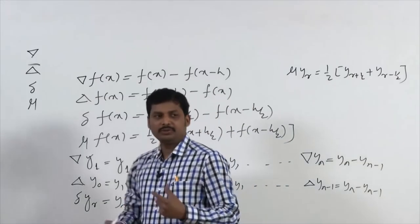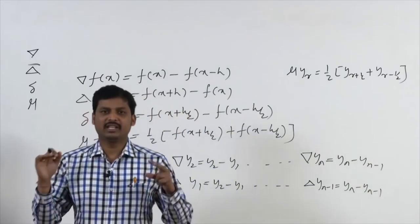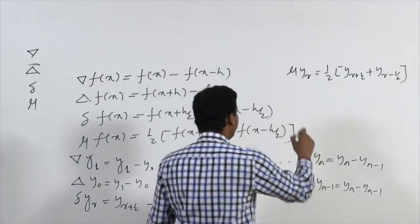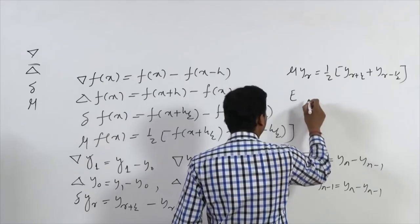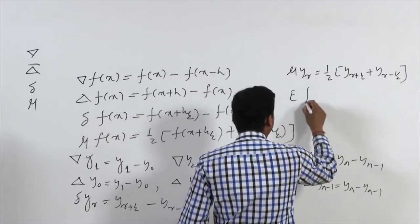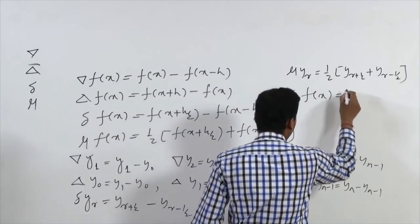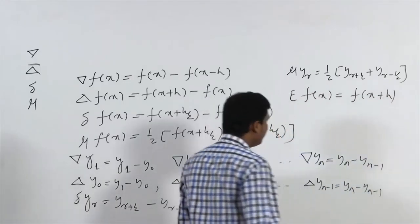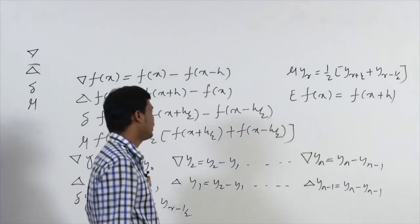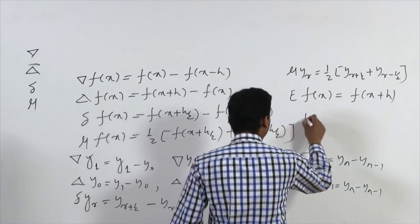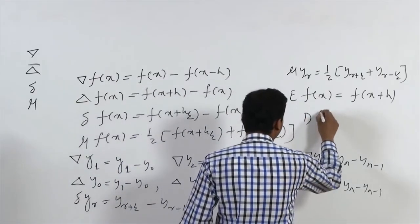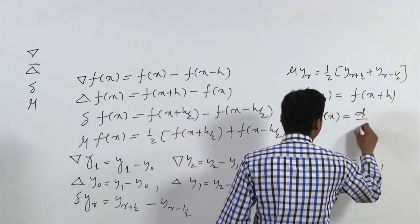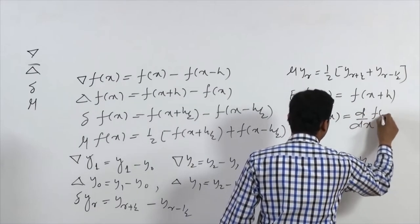If we use the shift operator form, E is called the shift operator, denoted E, where E[f(x)] = f(x+h). The differential operator is denoted capital D, where D operated on f(x) gives d/dx of f(x).